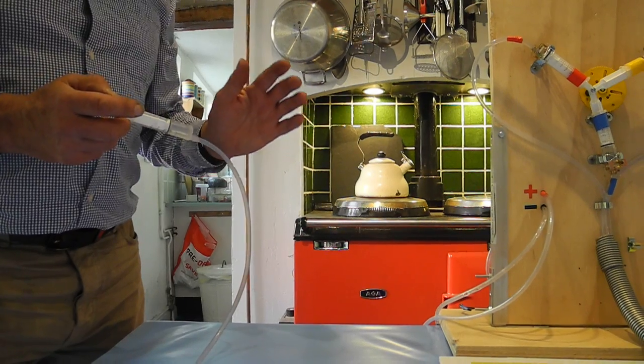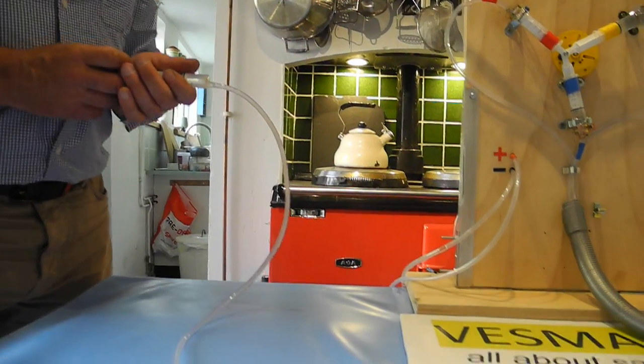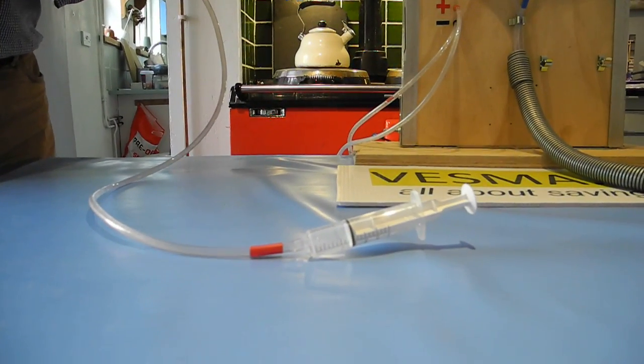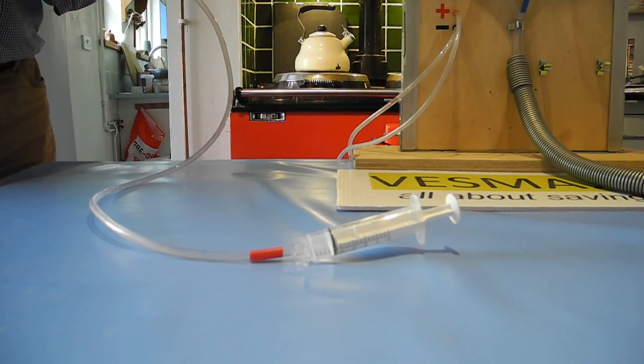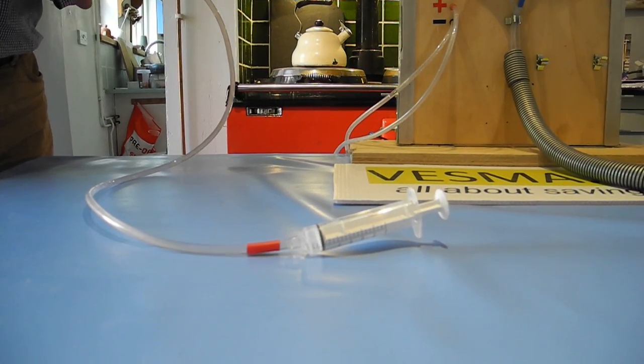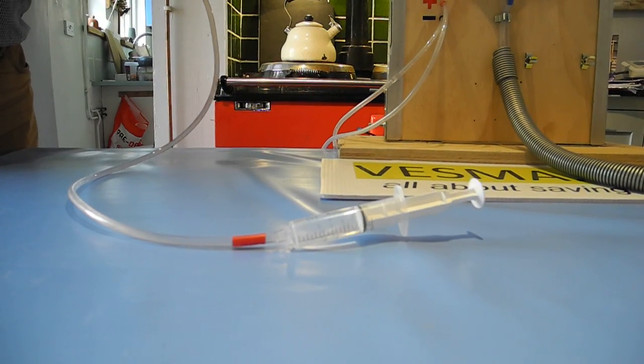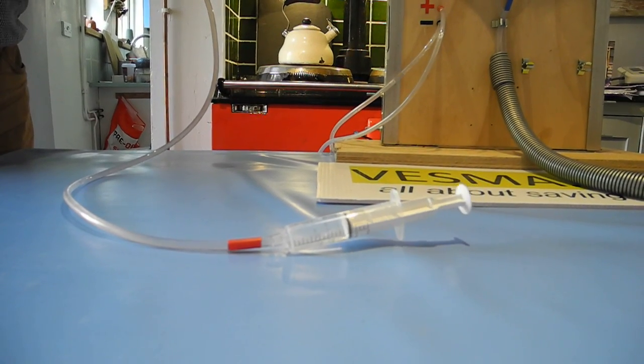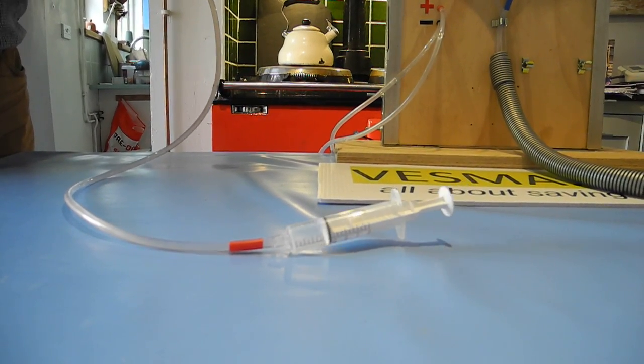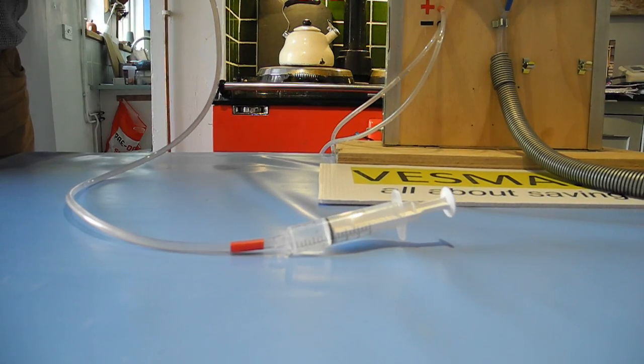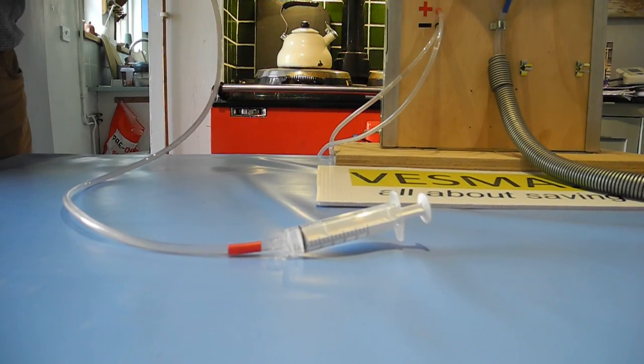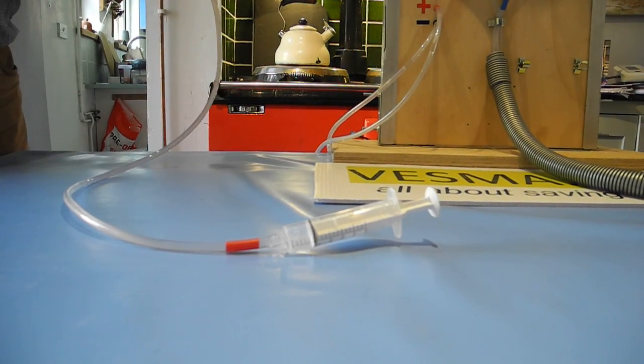The electricity feeding a building is normally fed in as alternating current. So if we think about water flowing through a pipe as the analogy, the equivalent would be the water flowing backwards and forwards in the pipe. The electricity flowing into your building in alternating current flows in and out continuously, reversing direction 50 times a second.